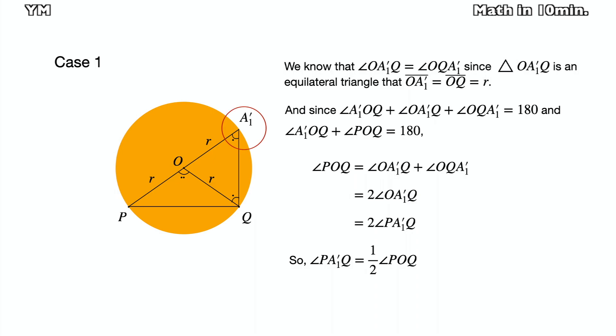Meanwhile, since angle OA1Q equals angle OQA1, this actually equals two times angle OA1Q. In other words, it is two times angle PA1Q. So angle PA1Q is equal to half of angle POQ.